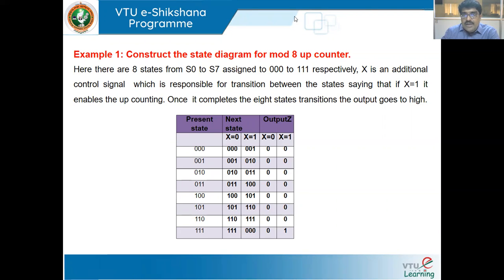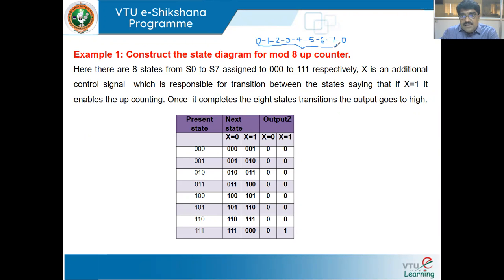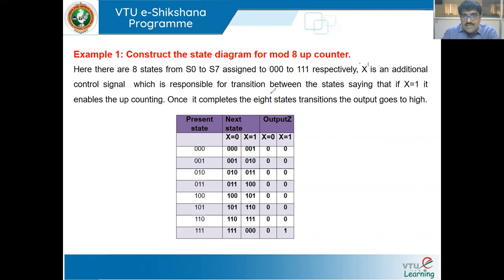The mod-8 counter goes through states zero, one, two, three, four, five, six, seven, and then back to zero. This is what up counting is all about. There are eight states from S0 to S7, assigned to binary values 000 to 111. We also define one variable X as an additional control signal responsible for transitions between the states.